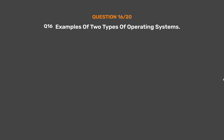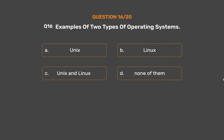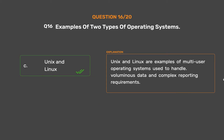Question number 16. Examples of two types of operating systems: Option A: Unix. Option B: Linux. Option C: Unix and Linux. Option D: None of them. The correct answer is Option C: Unix and Linux. Unix and Linux are examples of multi-user operating systems used to handle voluminous data and complex reporting requirements.